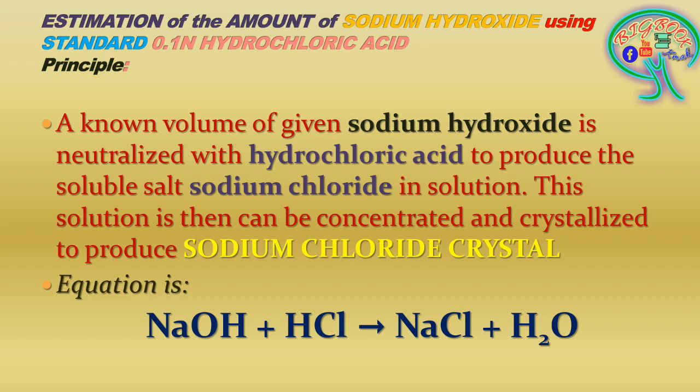Here, Na⁺ from NaOH is going to combine with Cl⁻ to give the product NaCl, whereas H⁺ from HCl and OH⁻ from NaOH — that is, H⁺ and OH⁻ — are going to combine to give the water molecule.